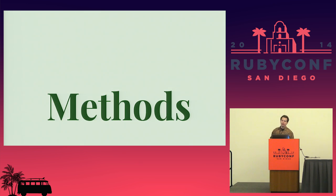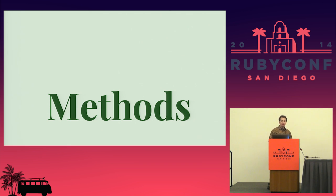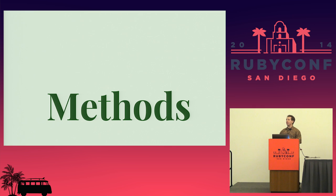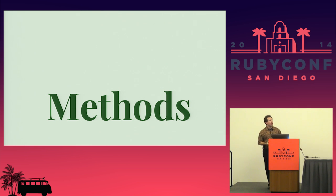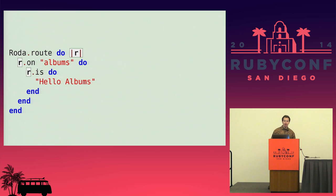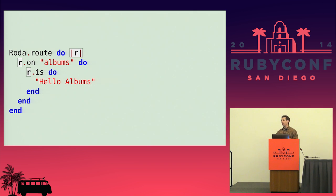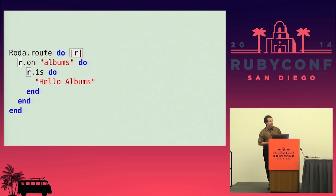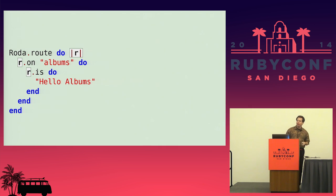Roda also avoids polluting the method namespace. With Cuba, all routing methods such as on, get, and root are instance methods in the scope of the route block, so you cannot define view methods that conflict with them. Cuba is actually much better than most Ruby web frameworks in this regard, with only 23 additional methods over what is defined in Object. With Sinatra there are 68 additional methods. With Roda there are only 6. The reason Roda achieves only 6 is by moving the routing methods to the request class — the Roda.route block yields the request instance to the block, and routing methods are called on this request instance. Incidentally, Cuba's routing methods all have feature envy since they mostly just call methods on the request instance, so this is also good object-oriented design.